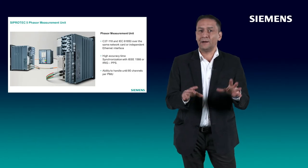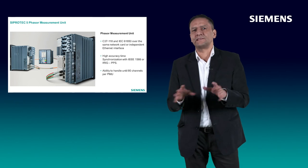The versatility of the SIPROTEC 5 PMU permits having independent networks for the WAMS system and the station automation system, or having both over the same network.